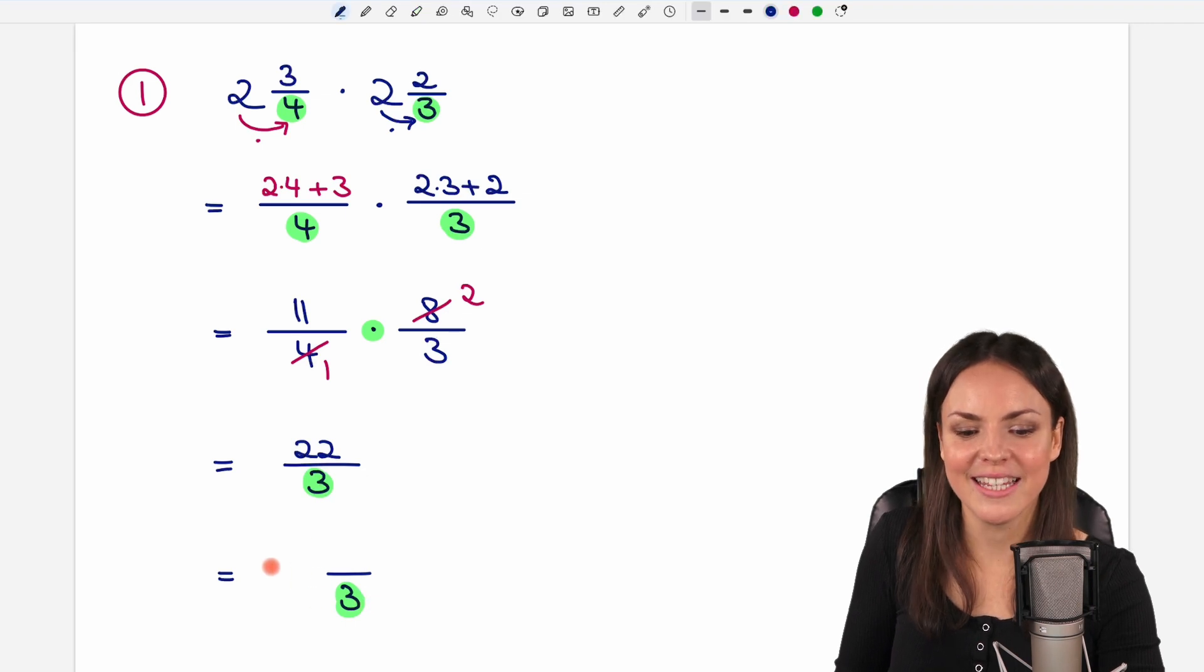And to find this big number here in front, we have to take a look at how often the 3 fits into the 22. Well, the 22 is not divisible by 3, but the next smaller number, the 21, is divisible by 3. How often does the 3 fit into the 21?